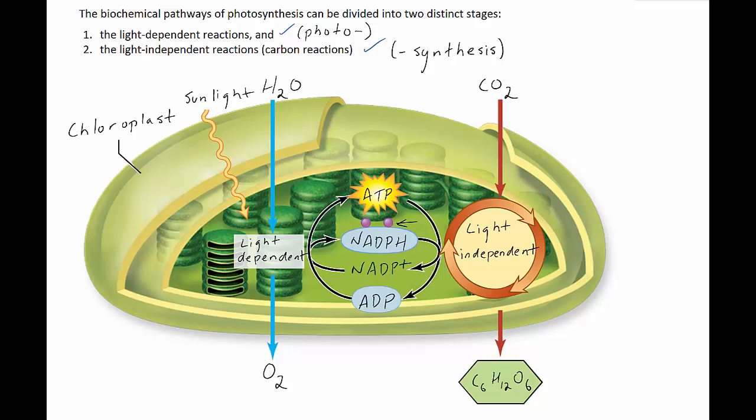The light-independent reactions do not need sunlight to occur. They are independent of the need for light. So as long as there is enough ATP and NADPH inside the chloroplast, the light-independent reactions can occur.